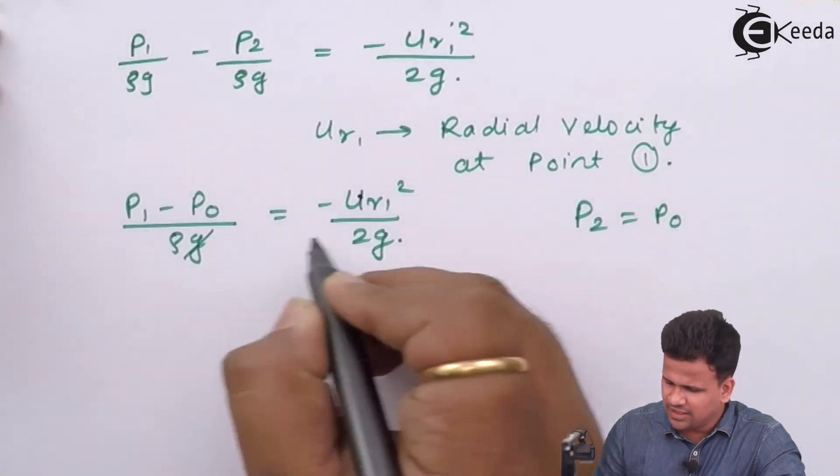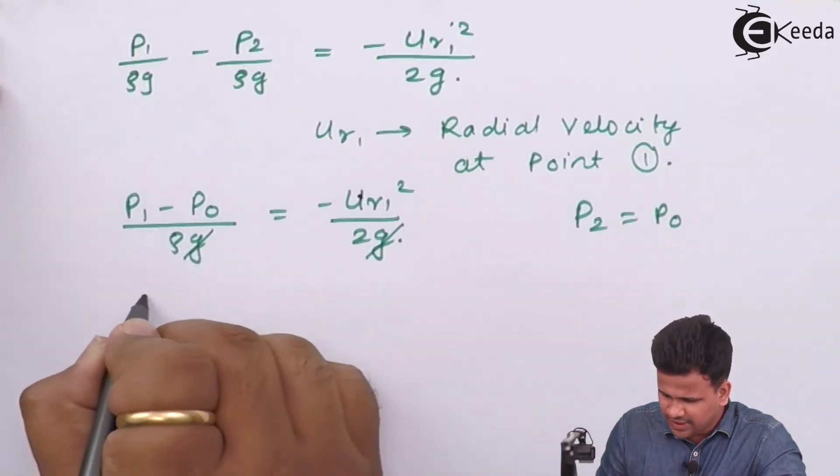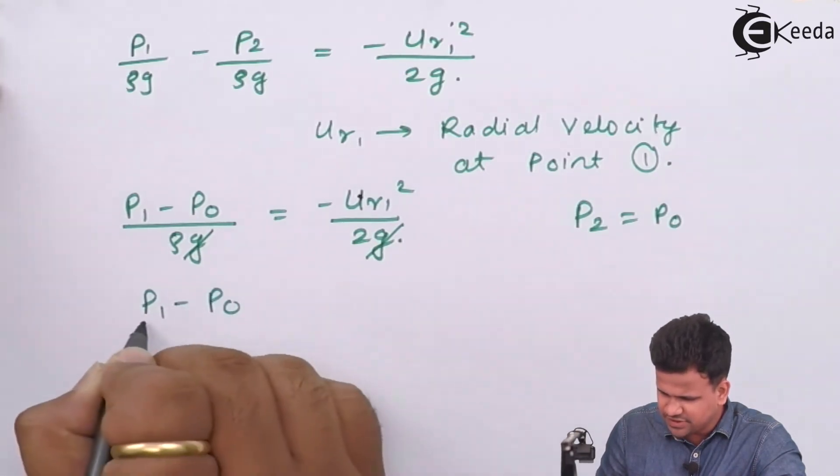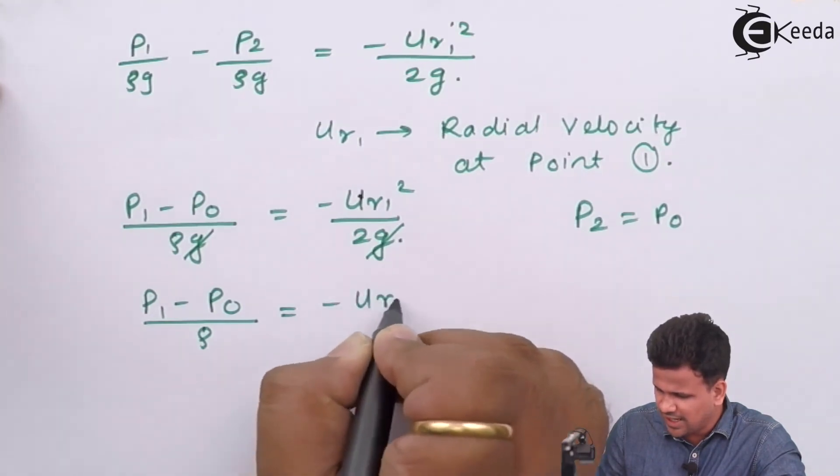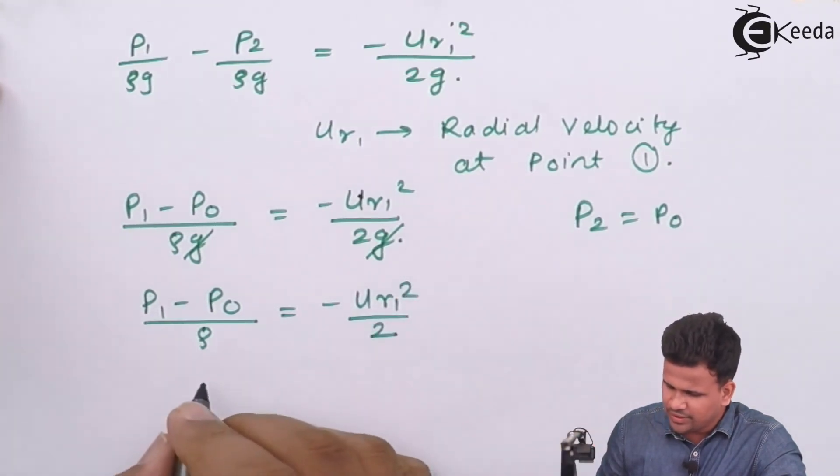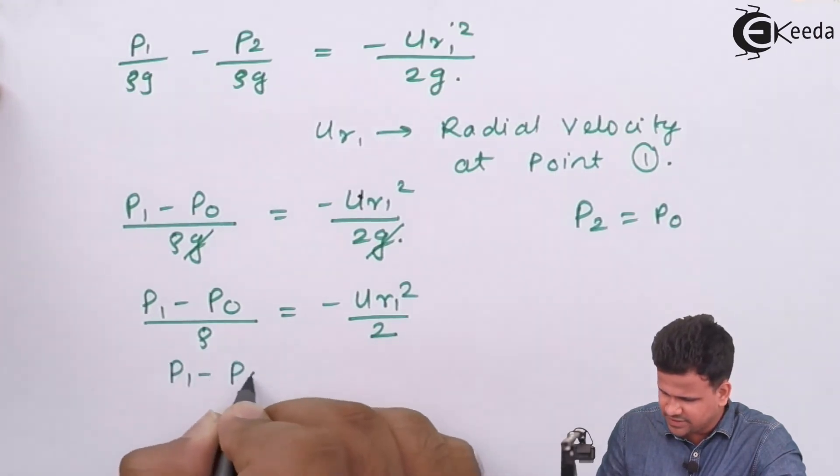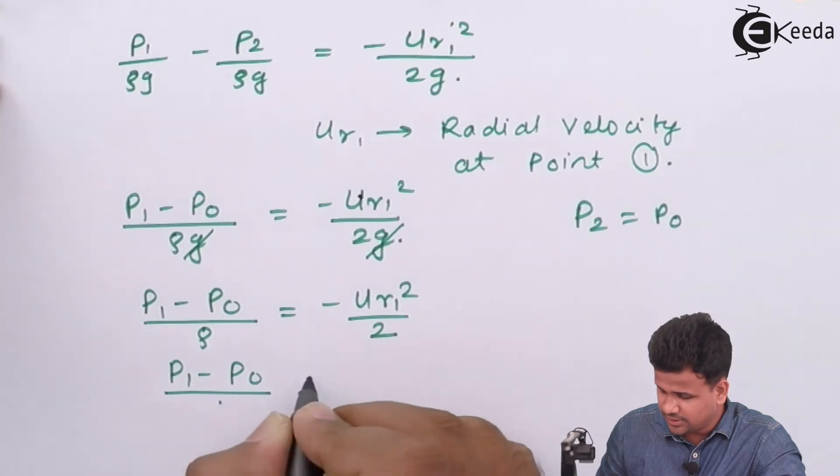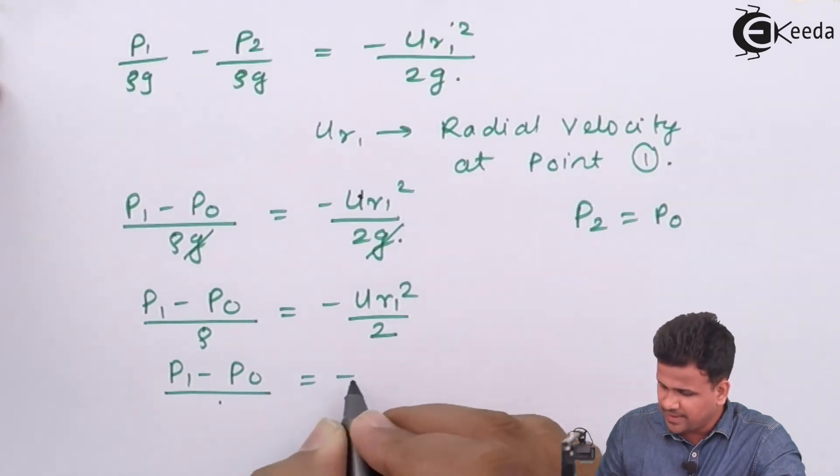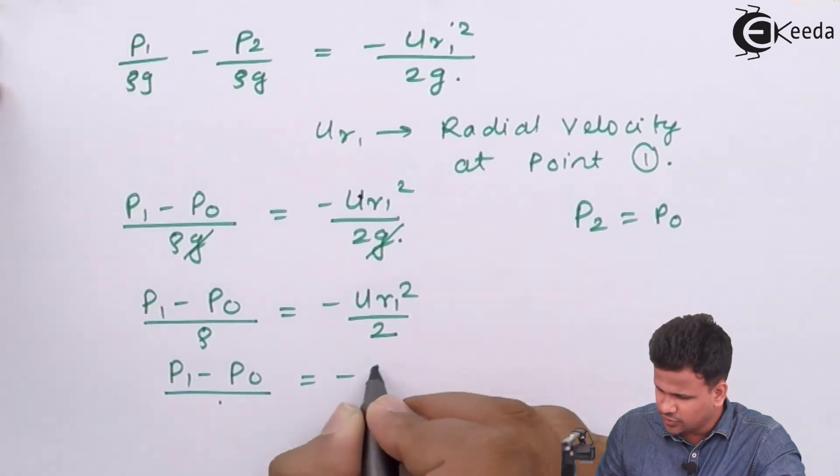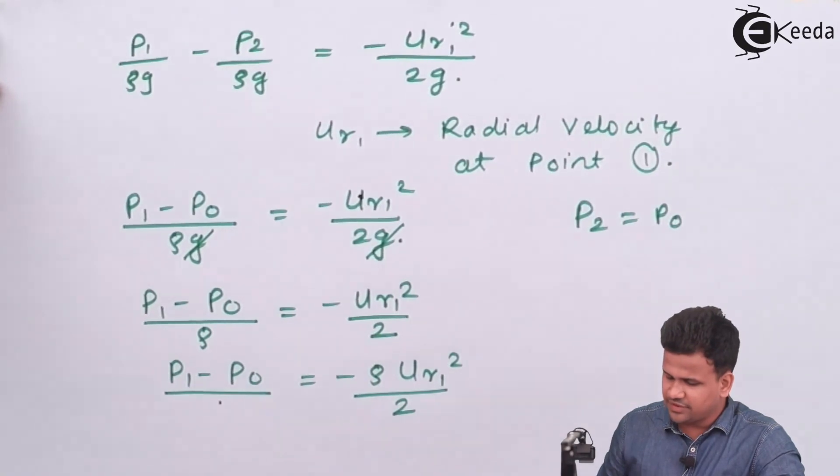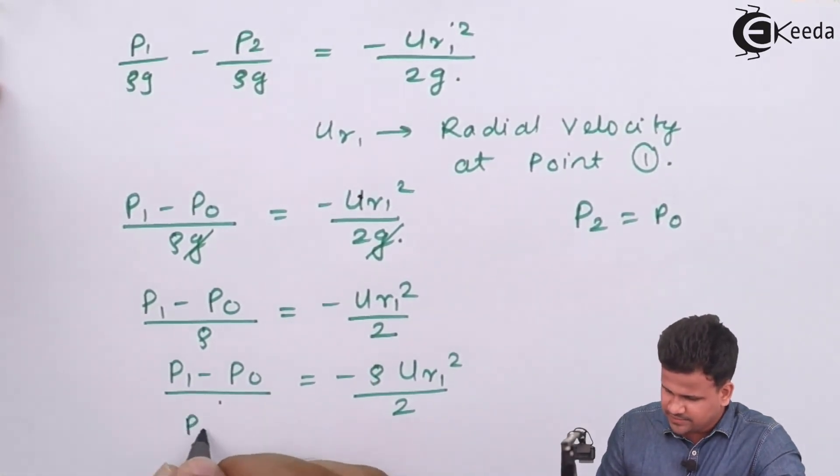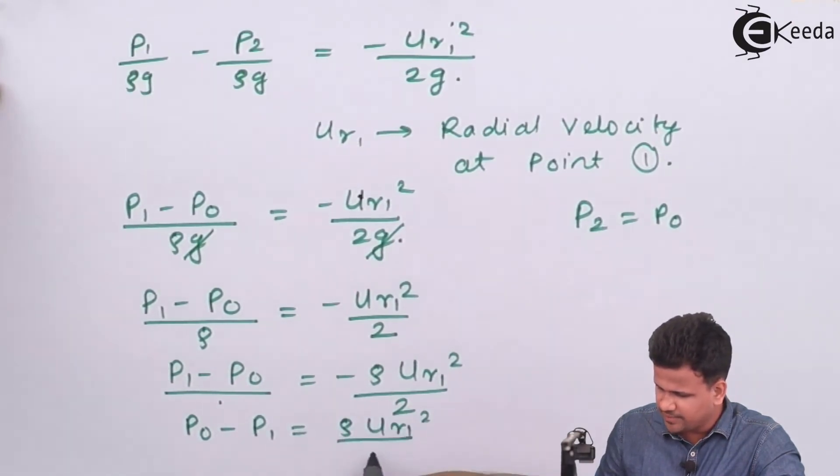The value of g is canceled out and what you get is (p1 - p0)/ρ = -ur²/2, or this can be written as p1 - p0 = -ρur1²/2. We can further write this as p0 - p1 = ρur1²/2.